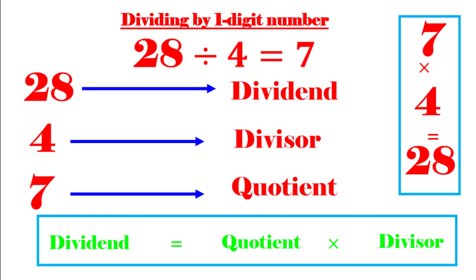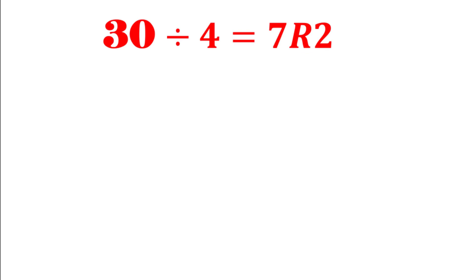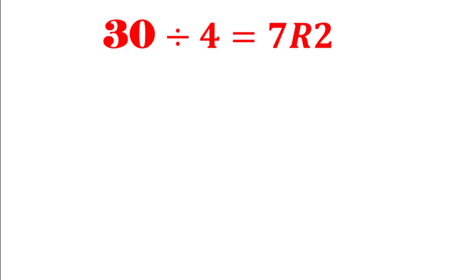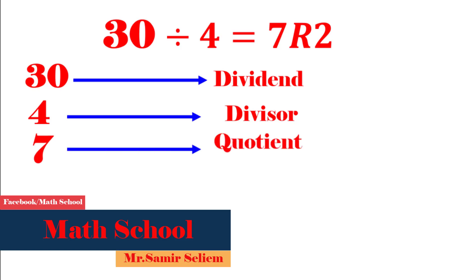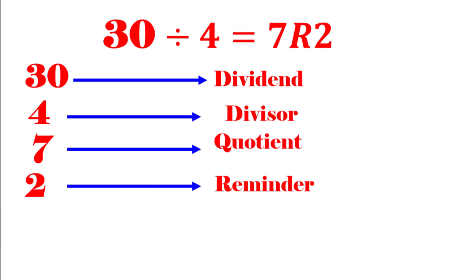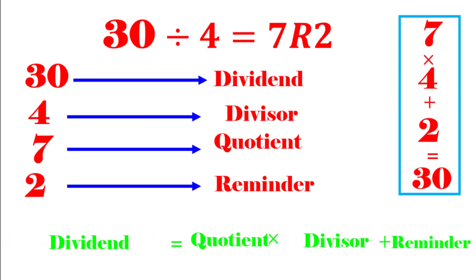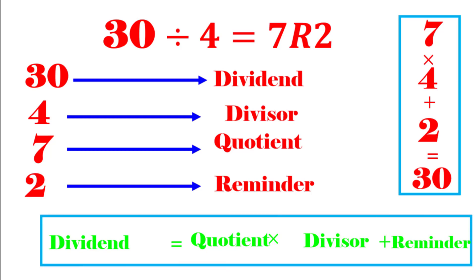But if we have 30 divided by 4, ask yourself: what number times 4 equals 30? There is no exact answer, but 7 times 4 equals 28, and 28 plus 2 equals 30. That 2 is called the remainder. So 30 is the dividend, 4 is the divisor, 7 is the quotient, and 2 is the remainder. The relation is: 7 times 4 plus 2 equals 30 — so the dividend equals quotient times divisor plus remainder.